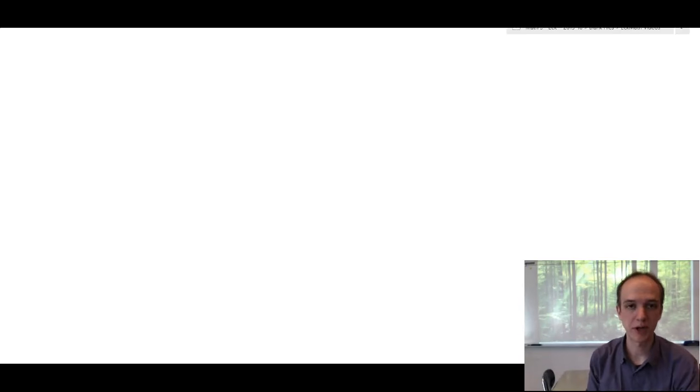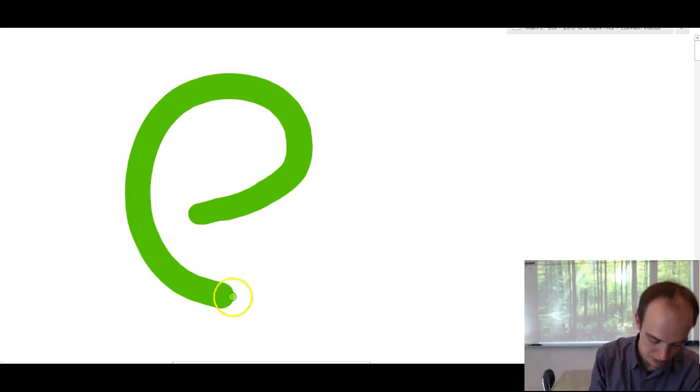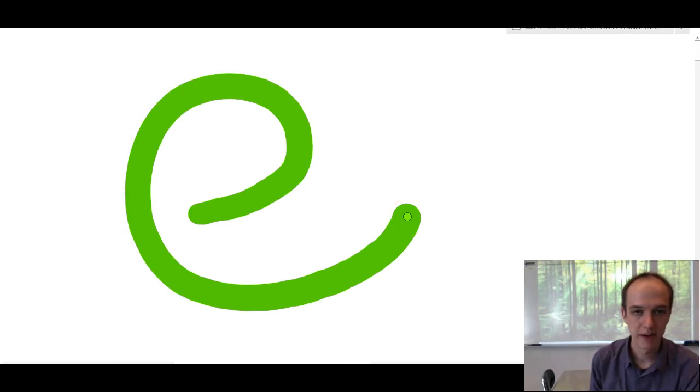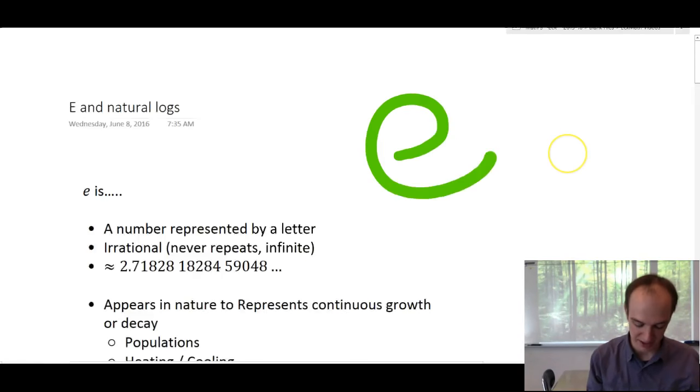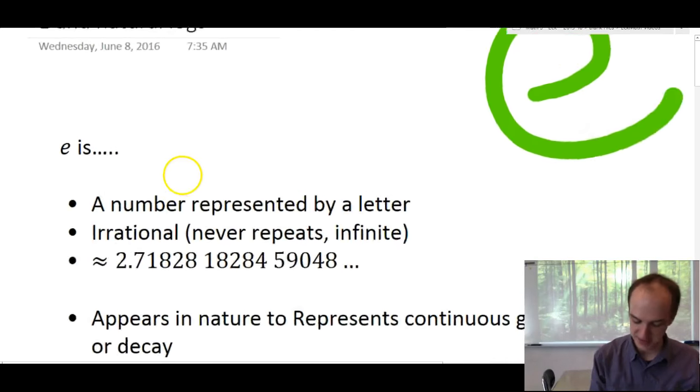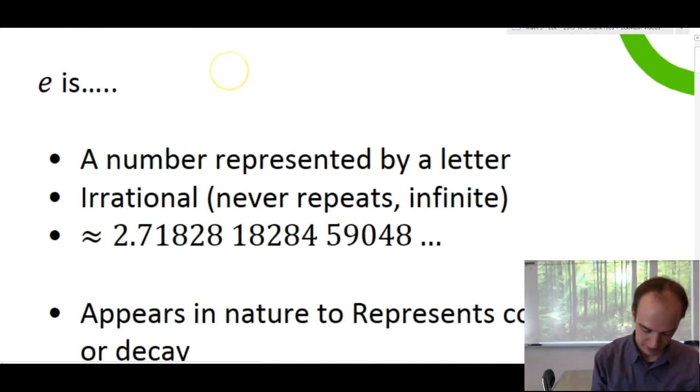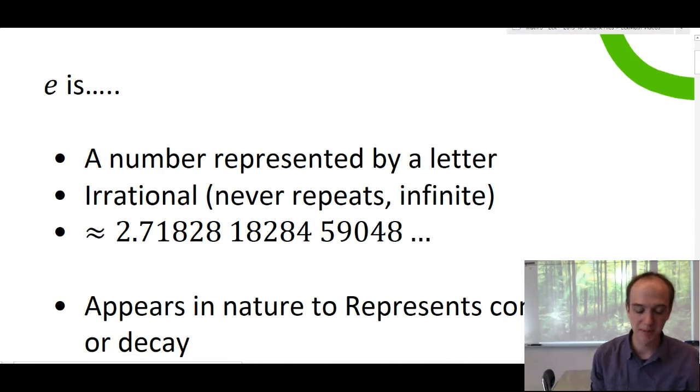The most important number when we're talking about logs and natural logs is the number E. And it's really important for you guys to know that E is in fact a number, not just a letter. So what is E? Well, it's a number. We represent it by a letter. We're familiar with numbers like this. Pi is one of those things. These are like the most famous numbers, the most important numbers. Pi is a number and E is another number.